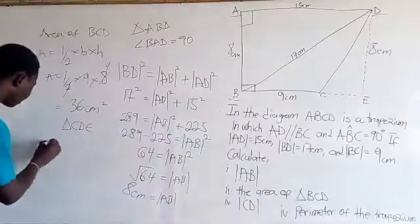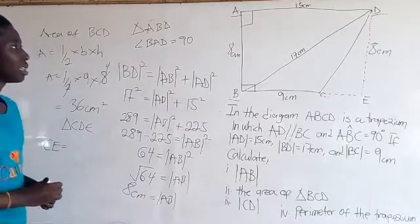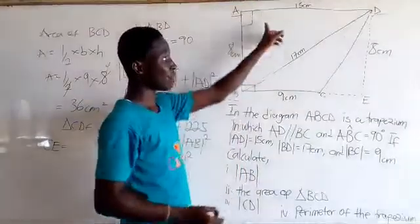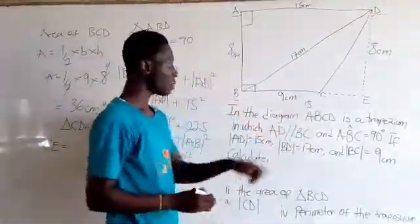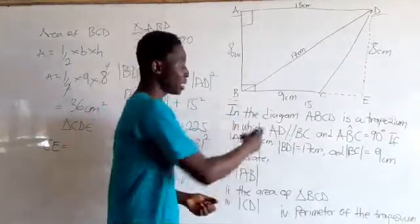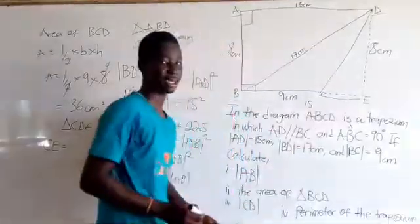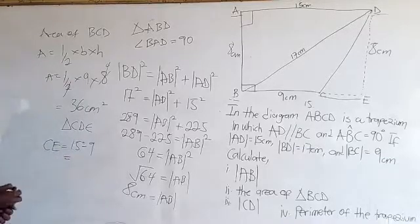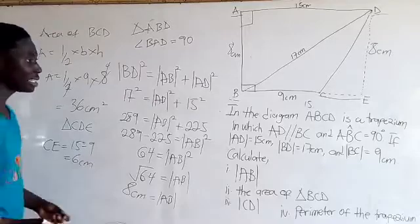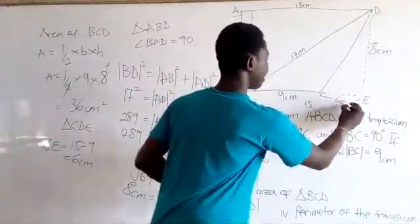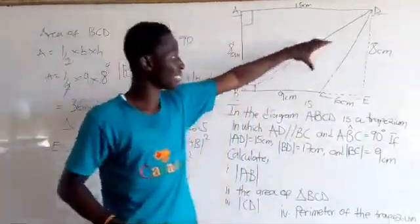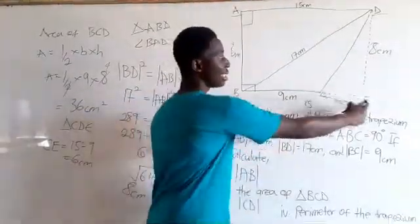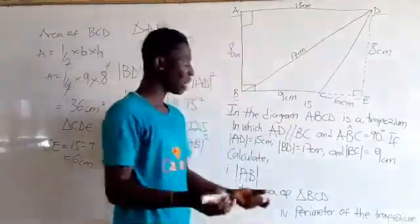CD equals — now we know AD is 15cm. Since AD is 15cm, the corresponding full length is also 15cm. But BC is only 9cm, so we subtract 9 from 15 to get CE, which is 6cm. So side CE is 6cm, and DE is 8cm. Angle CED is 90 degrees, so we can use the Pythagoras theorem.